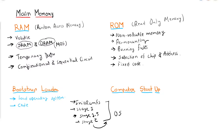ROM is non-volatile memory that stores data permanently. Full form: Read Only Memory — only read operations are possible. Data is stored by burning fuses. To read from ROM, only two inputs are needed: chip selection and address. The data stored inside ROM is fixed.